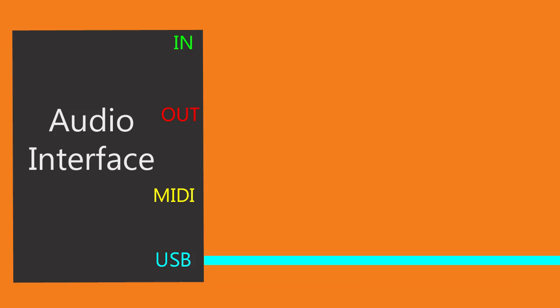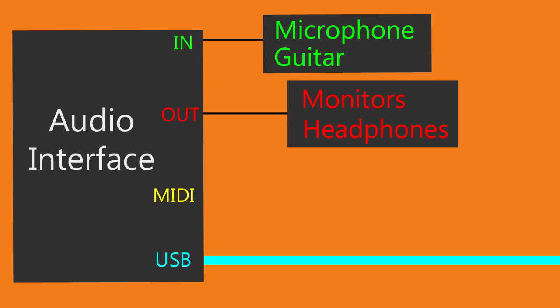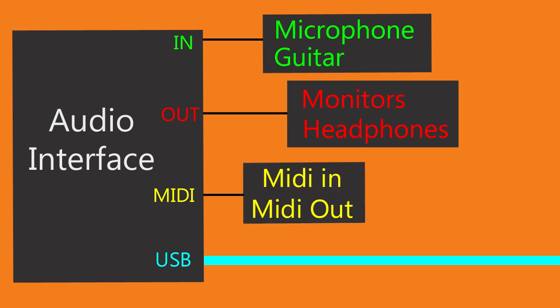At a minimum, most audio interfaces will have provisions for connecting microphones and guitars, monitors and headphones, and MIDI in and MIDI out for connecting MIDI keyboards.